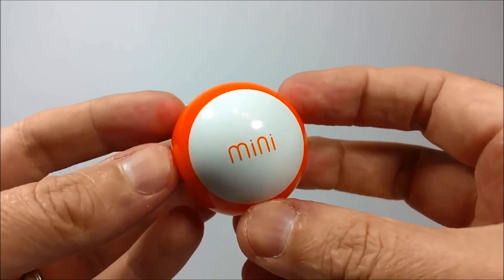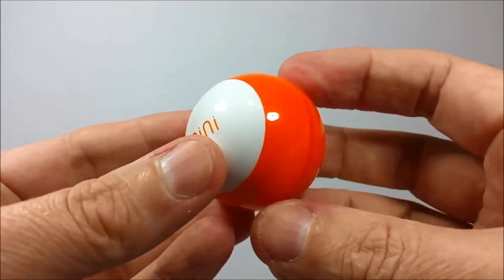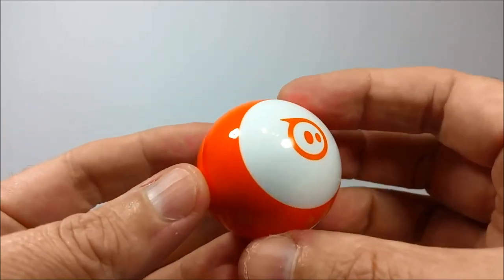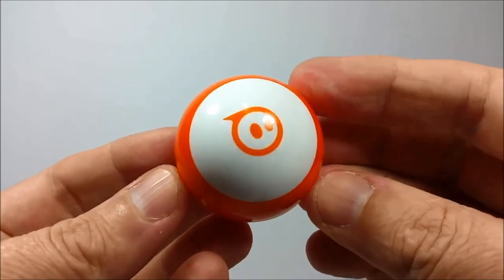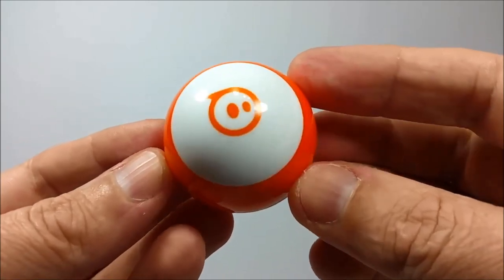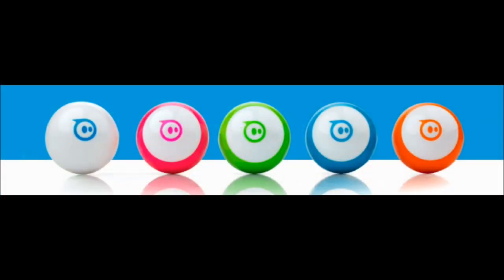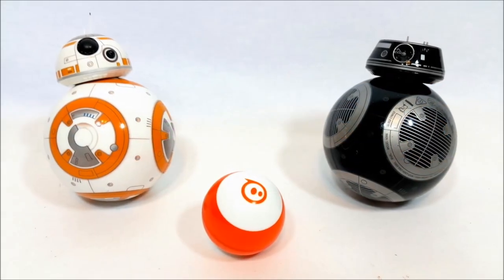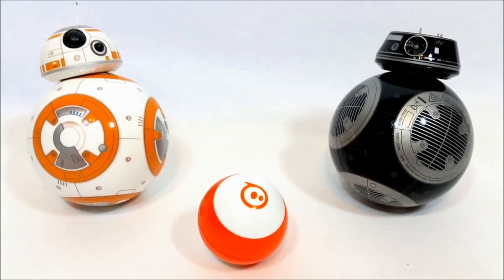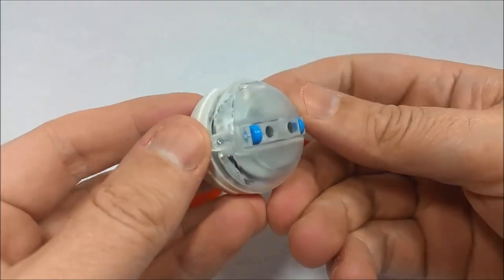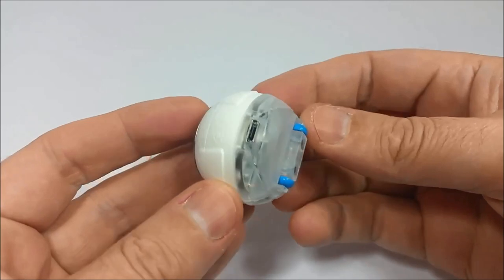So the Sphero Mini is roughly the size of a ping-pong ball and it weighs just 46 grams. It currently comes in five different colors: white, pink, green, blue, and orange. And it's chock-full of teeny tiny technological wonders such as its mini gyroscope, an equally small accelerometer, and built-in LED lights that can glow in pretty much any color imaginable.